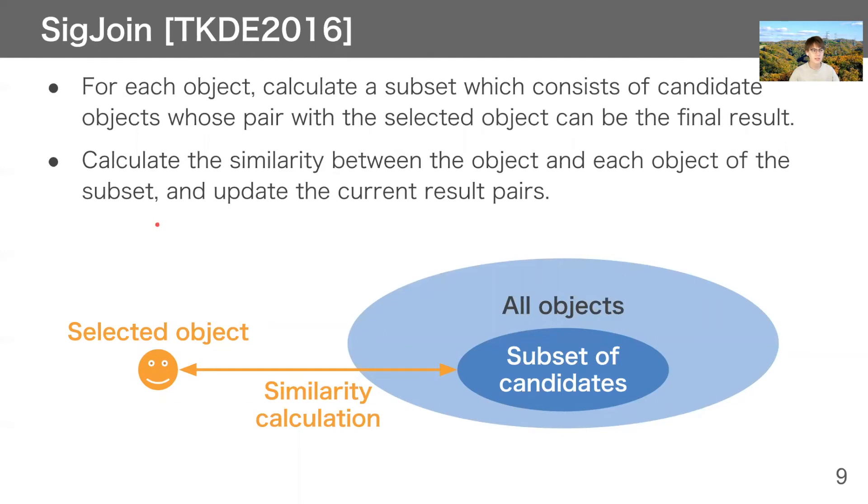Here is the state-of-the-art algorithm for Top-K Spatial Keyword Similarity Join. In SicJoin, for each object, calculate a subset which consists of candidate objects whose pair with the selected object can be the final result. After that, we calculate the similarity between the object and each object of the subset, and update the current result pairs. Note that we calculate the similarity between the pair of all objects and the subset, so we can decrease the number of similarity calculations.